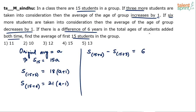Actually, we need the ages of those 6 students minus the ages of the 3 students. Taking the 15 students on both sides, they cancel out anyway. The sum of ages of 15 students cancels on both sides, so what we get is the difference between the ages of the 6 added students and the 3 added students equals 6. Substituting: 21 times (a minus 1) minus 18 times (a plus 1) equals 6.